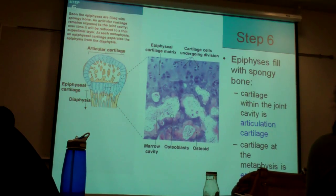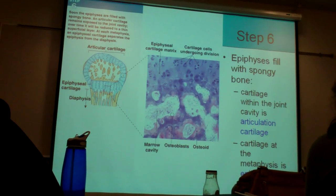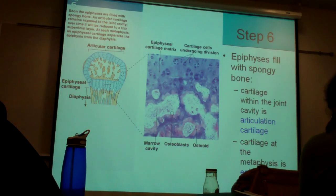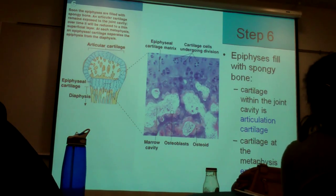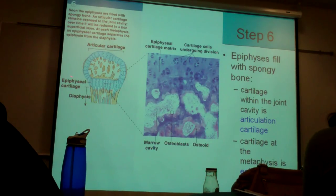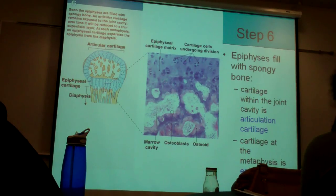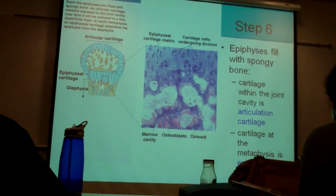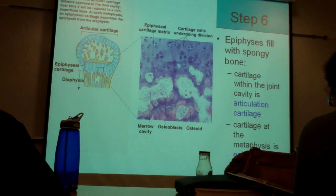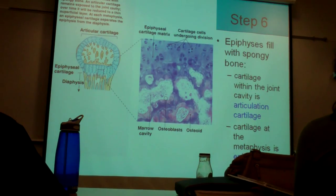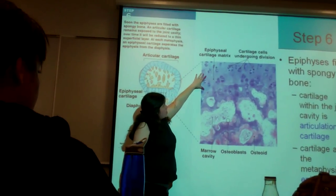The epiphyses now fill with spongy bone. The diaphysis had spongy bone too, but it all became a medullary cavity. The epiphyses get spongy bone, and we call the remaining cartilage on the end of the bone articular cartilage, and we call the cartilage between the diaphysis and epiphysis epiphyseal cartilage. It's the same cartilage — this one is articulating with the next bone, and this one is really important.